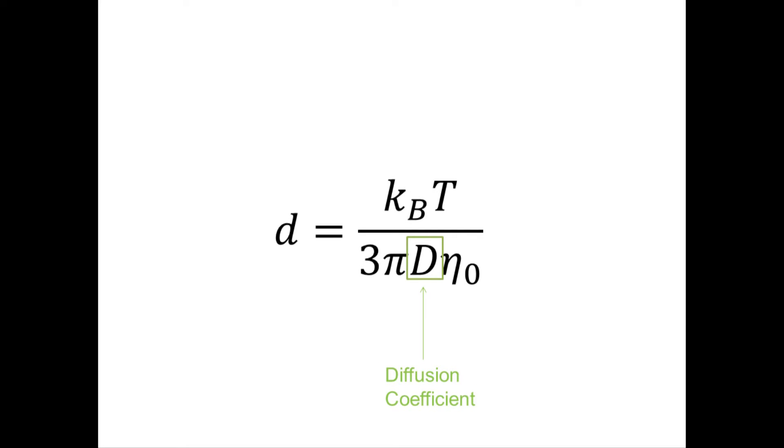The diffusion constant, which is proportional to the lifetime of the exponential decay, can be found by fitting the correlation curve to an exponential function. From the diffusion constant, the particle's diameter can be found using the Stokes-Einstein equation.